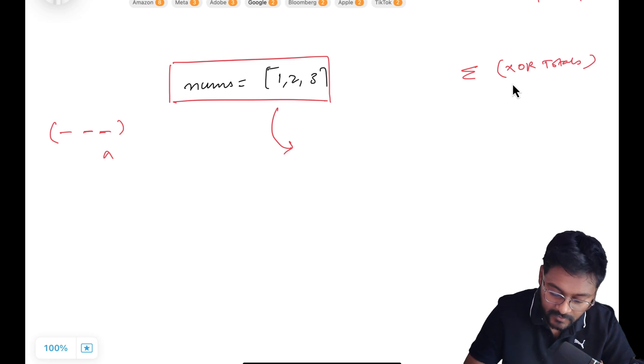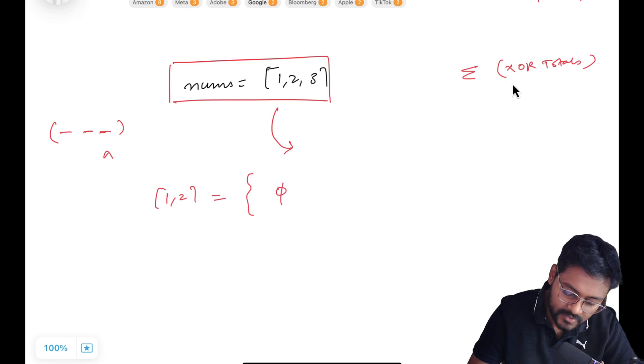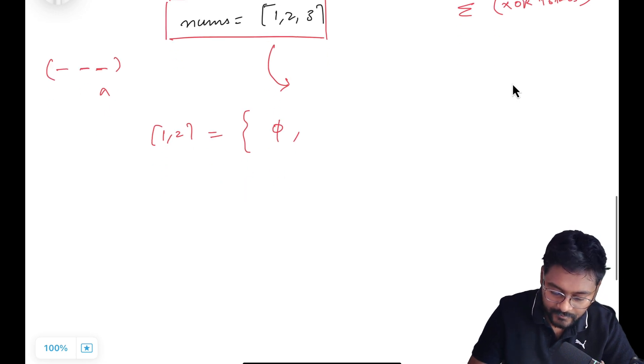First of all let's see what are all the subsets. If we have three elements at every element we have two possibilities: either that will be part of the subset or not. To keep it simple let's say we are having elements like 1 and 2. What are the subsets? First one is empty set, second one is picking only one element, second set is this, third set is this.